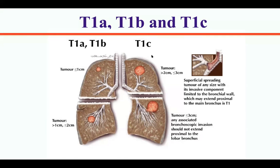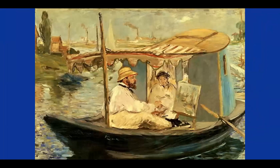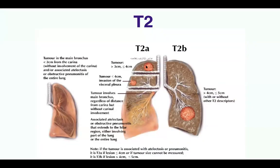Tumors can invade visceral pleura, or visceral and parietal pleura together. This shows a tumor invading chest wall — this is T3, and we operated this patient. In another patient the tumor also invades the chest wall, and we operated that patient too. There is also a relatively small tumor invading the chest wall for which we performed lobectomy plus chest wall resection. If the tumor invades the chest wall, we do chest wall resection.